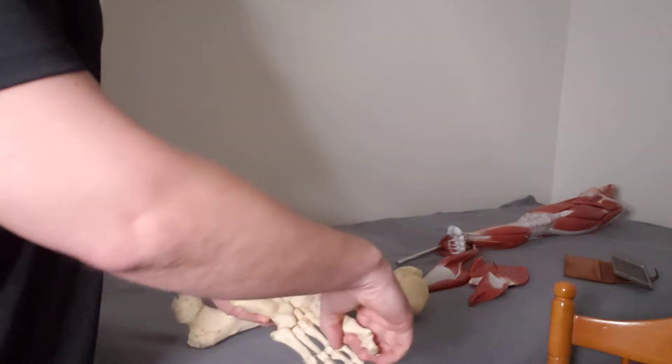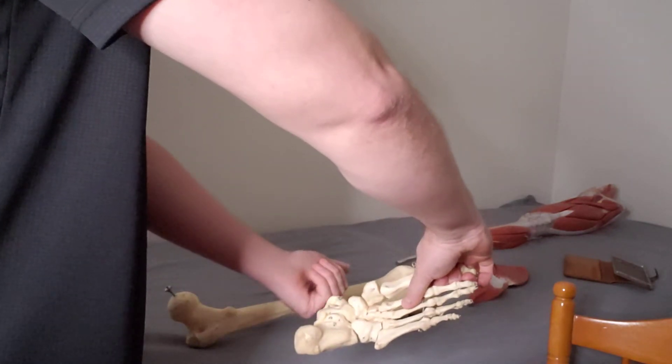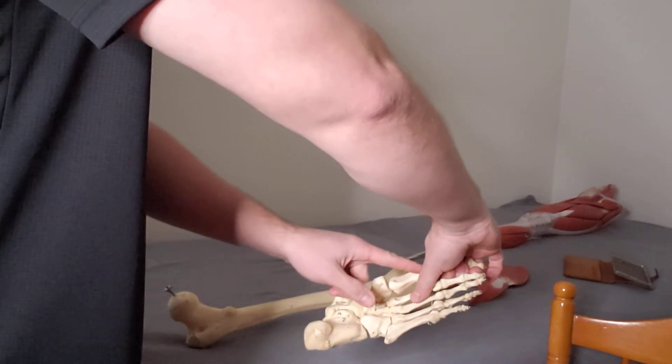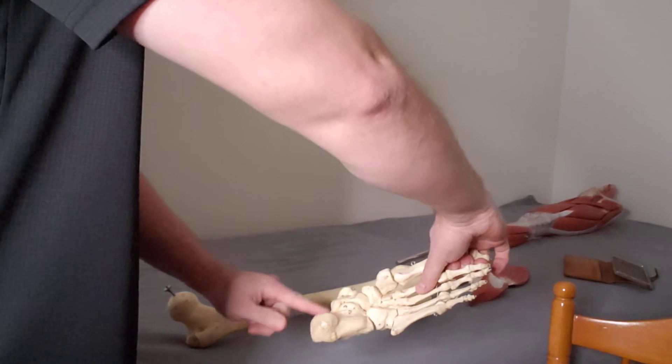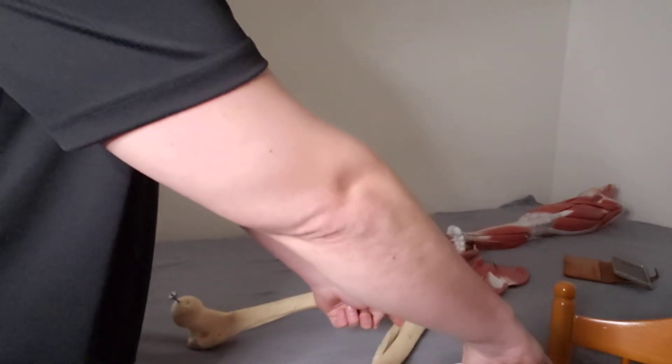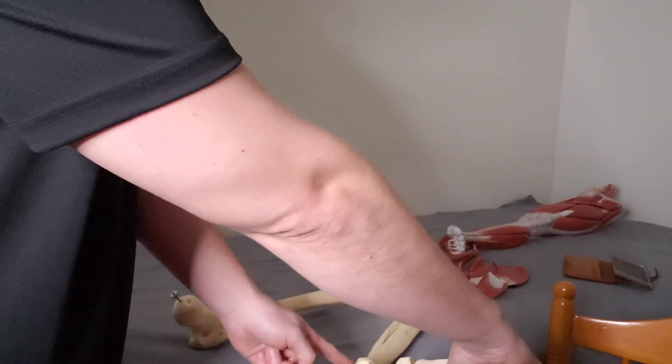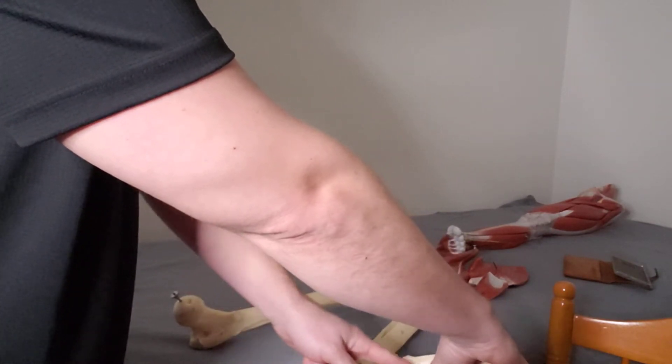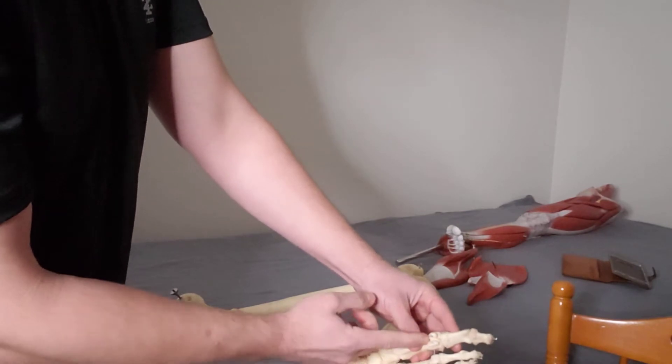If I can be applying that motion while gliding here, that flexor hallucis longus, a really important big toe muscle, it goes all the way up here from the tibia down past that medial malleolus, through between those sesamoid bones, down into the big toe.